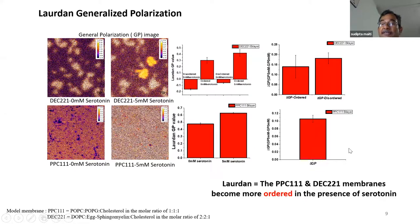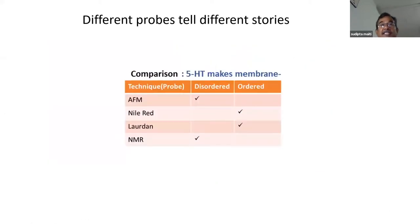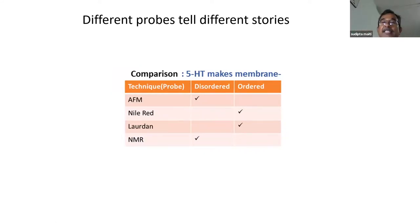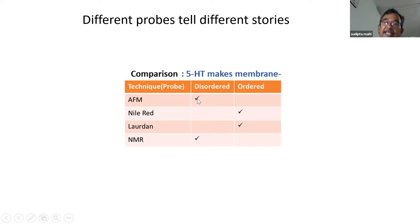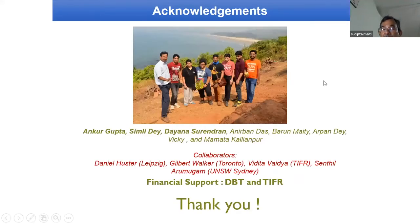These are completely opposite results — and the whole message of this talk is that if you are doing biology and trying to probe membrane order, you better know what you're talking about. It is not the same thing. If you're thinking about a pore opening, your probe may actually be telling you the opposite story. Here's the summary: using 5-HT as an agent, AFM shows the membrane gets more disordered, NMR confirms those results, yet Nile Red and Laurdan both show that the membrane gets more ordered.